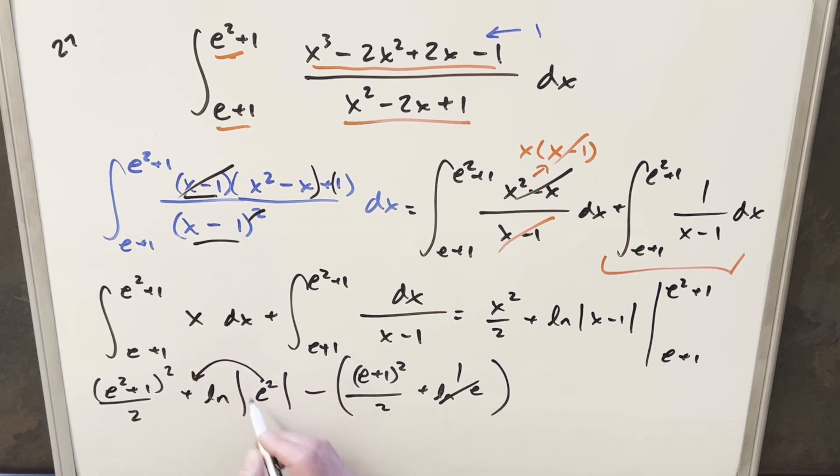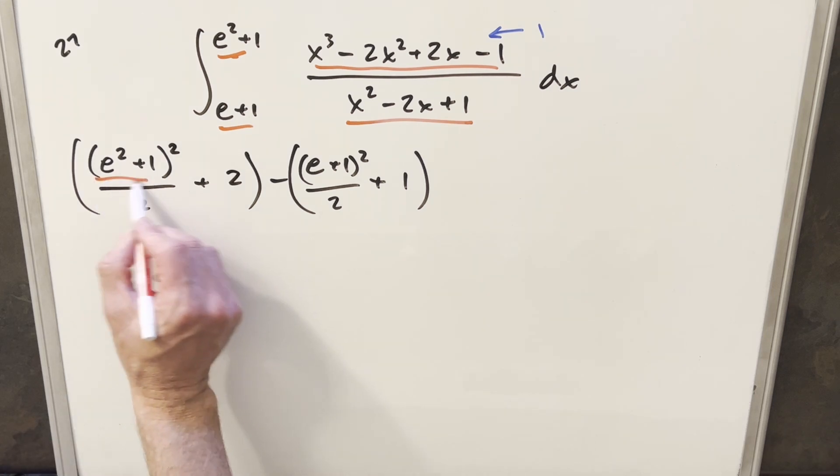Here we can pull a 2 out. Again, this is just natural log of e, so this piece here is going to be just a 2. Okay, now let's see if we can get some simplification.